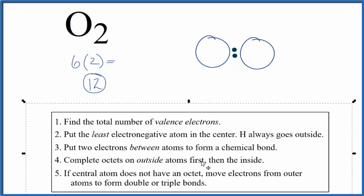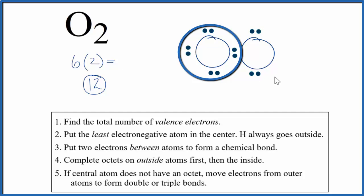After that we complete the octets. So let's do that. But the problem is we only have 12 valence electrons for O2 and we've already used 2, 4, 6, 8, 10, 12. This oxygen has an octet but this only has six.